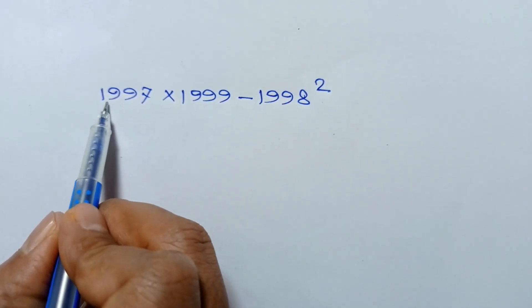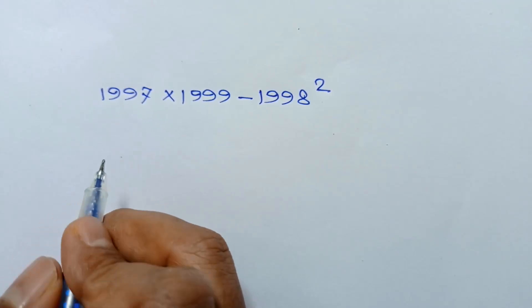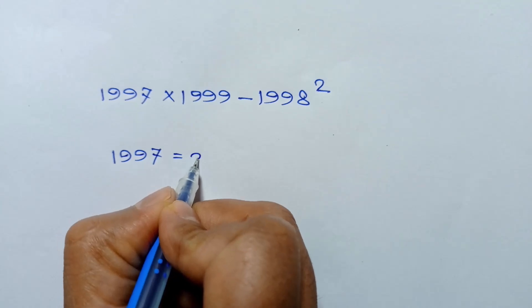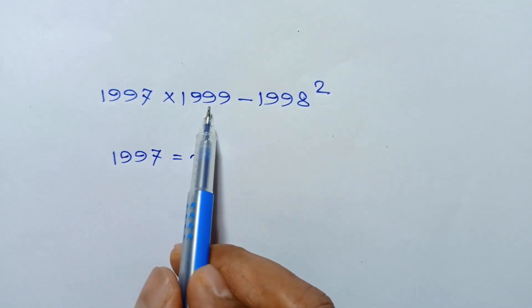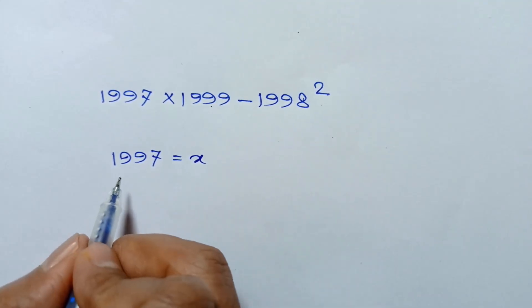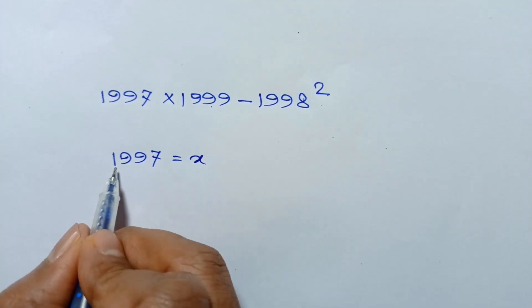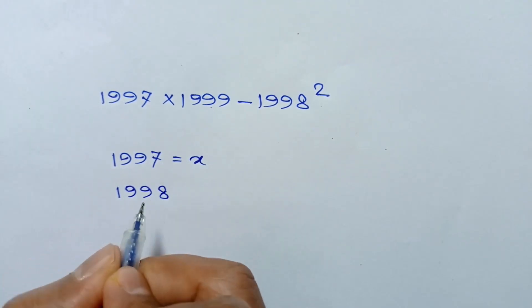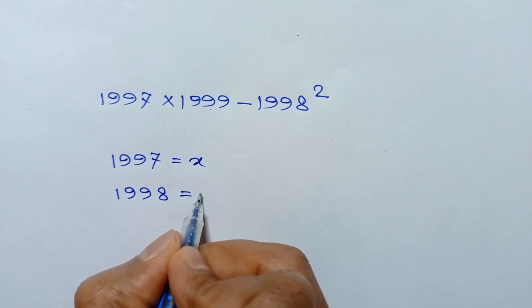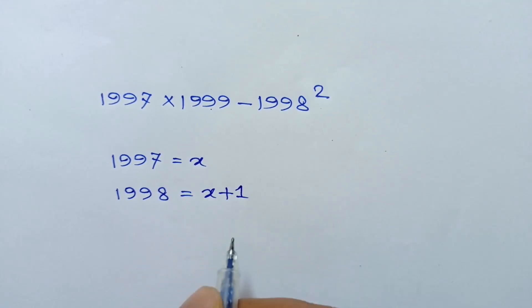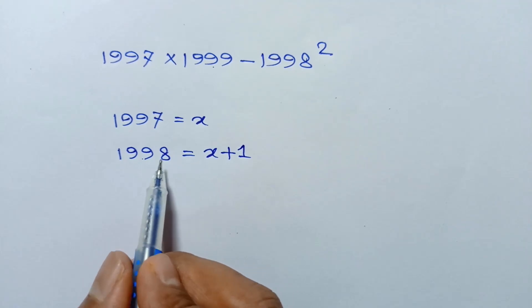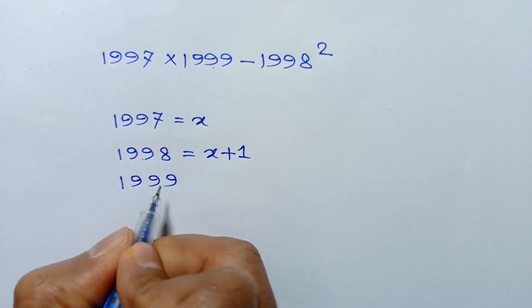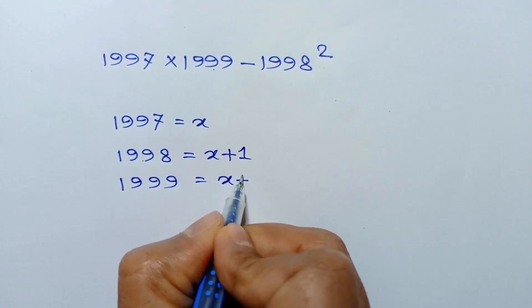Consider 1997 as x. So we can write 1997 is equal to x. Adding 1 to both sides, we get 1997 plus 1, which is 1998, is equal to x plus 1. Adding 1 again to both sides, we get 1999 is equal to x plus 2.